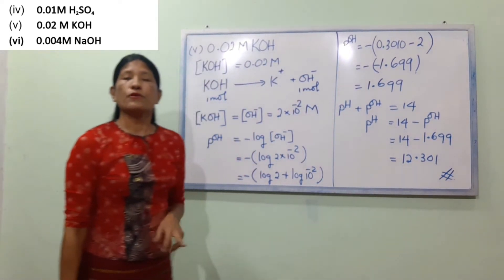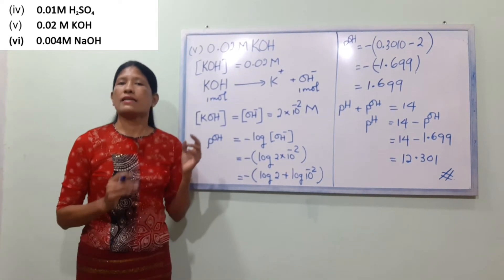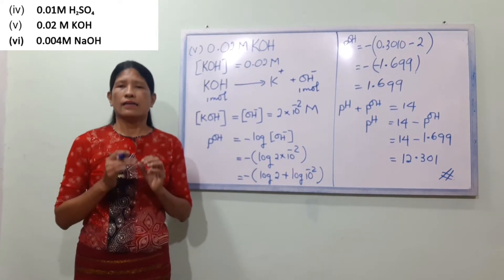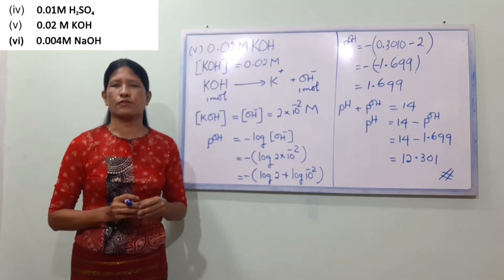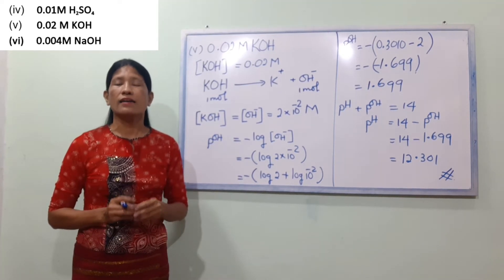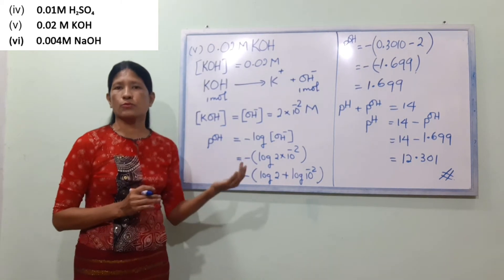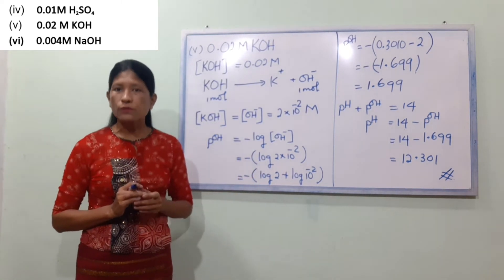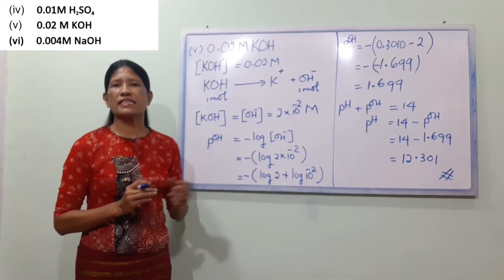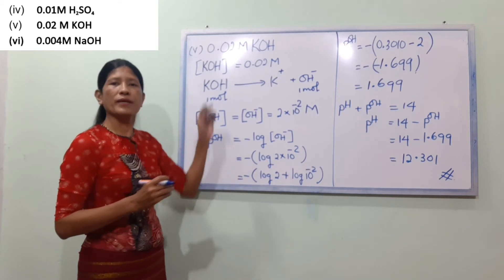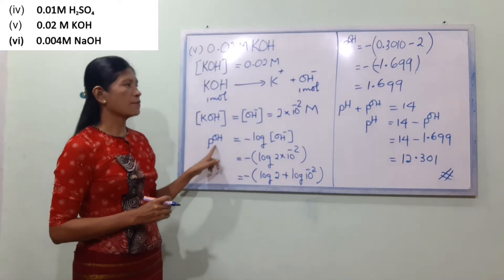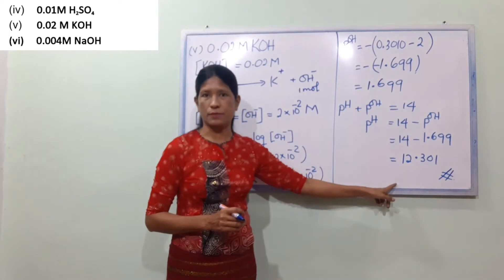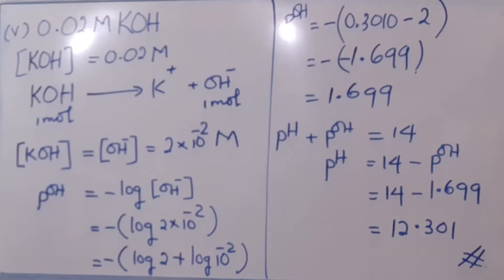Now recall: pH is equal to minus log of H⁺ ion concentration. pOH plus pH equals 14. This is the base line relationship we use for strong acids and strong bases.